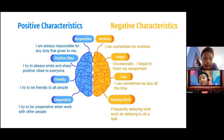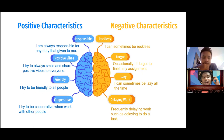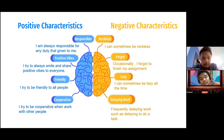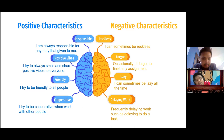Next is all about positive and negative characteristics. Starting with the positive, there are four positive characteristics. The first is responsible — I am always responsible for any duties given to me. The second is positive vibes — I try to always smile and share positive vibes with everyone. The third is friendly — I try to be friendly to all people. And last, cooperative — I try to be cooperative when working with other people.